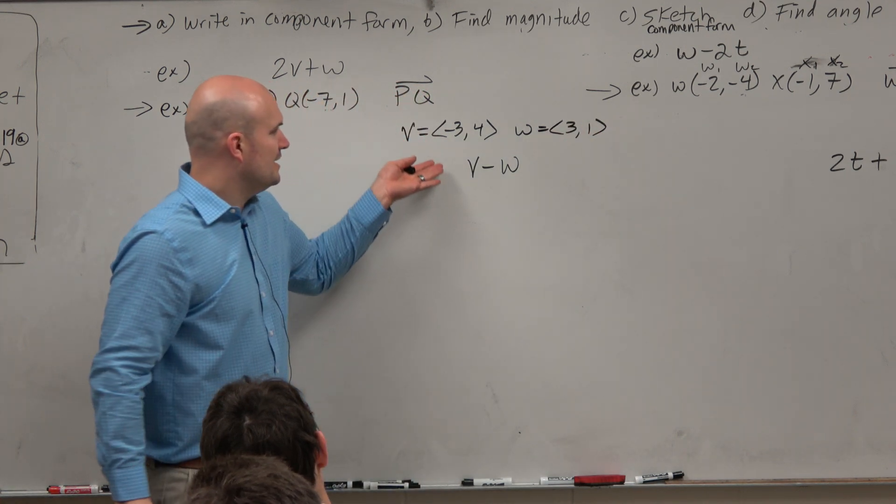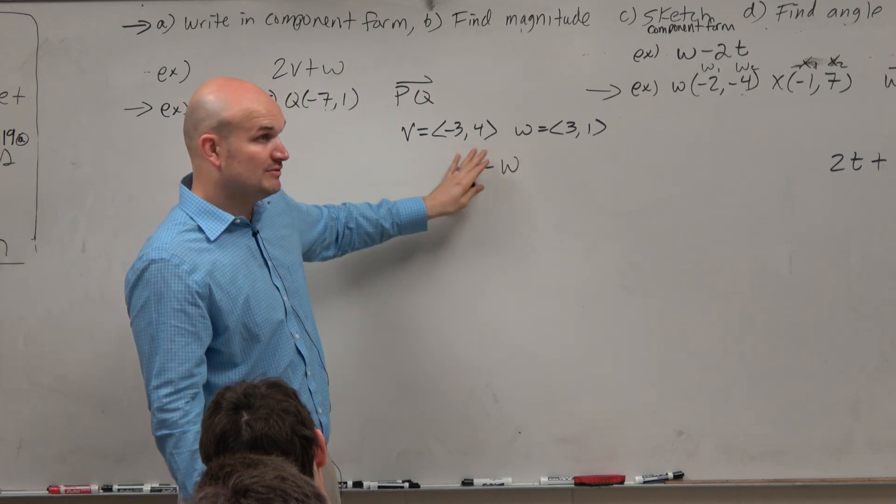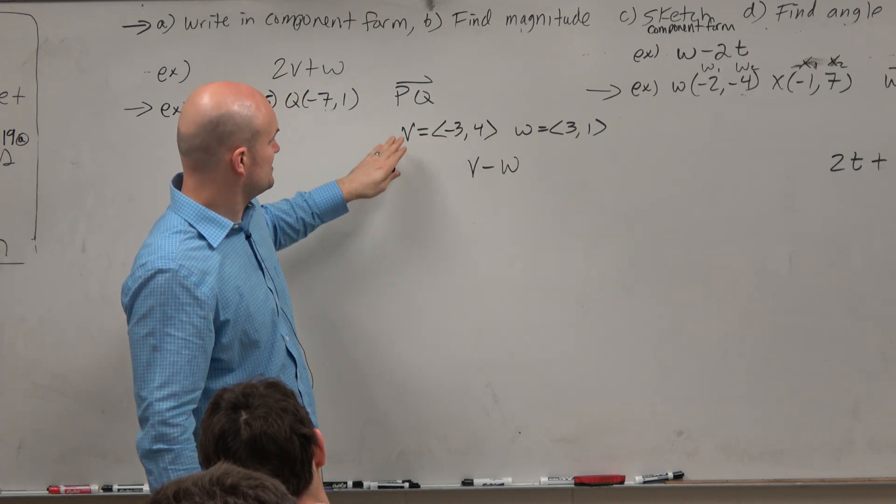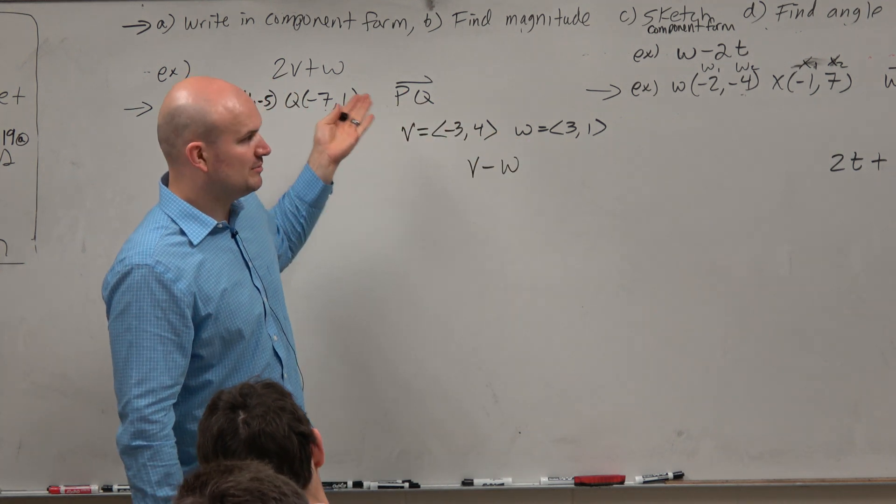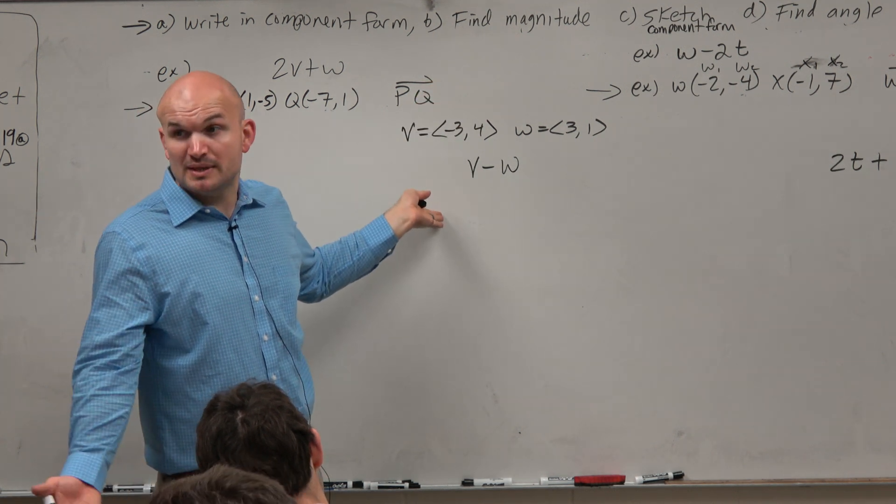You guys see how having component form just as variables is kind of nice. We have two vectors with names as simple variables, not like how we wrote the other ones. And they're in component form, which we like.